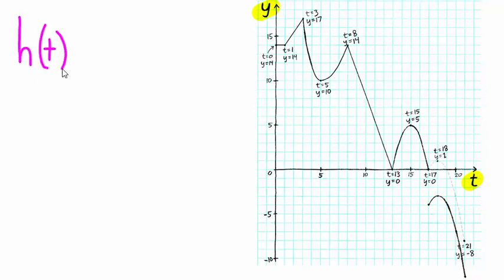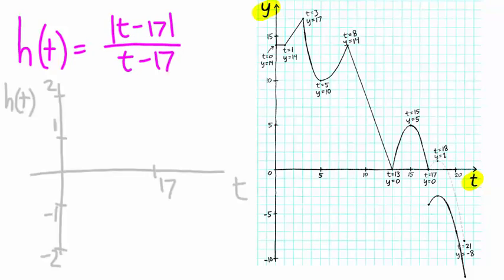h of t equals absolute value t minus 17 over quantity t minus 17. This is just a constant graph except for that jump of two units upward at t equals 17.